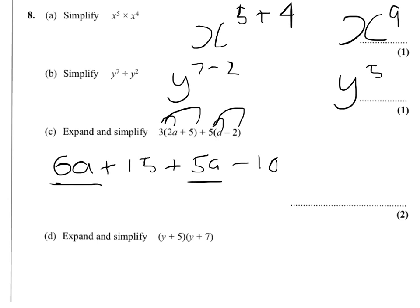Bring together your a's and you'll have 11a, and then it's 15 minus 10, which is 5.